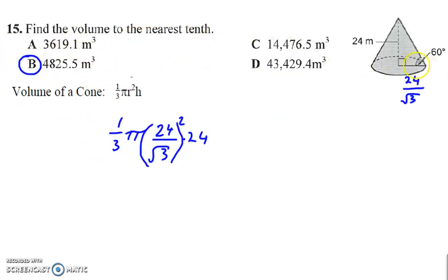Volume here. Now here we have 60 degrees, which makes this 30. 30, 60, 90, which means this side. Since the longer leg is the shorter leg times the square root of 3, the shorter leg is the longer leg divided by the square root of 3. So that's 24 divided by the square root of 3. Put that into our formula, and we get one third pi, then the radius is 24 over radical 3 squared times 24. And that gets us b.